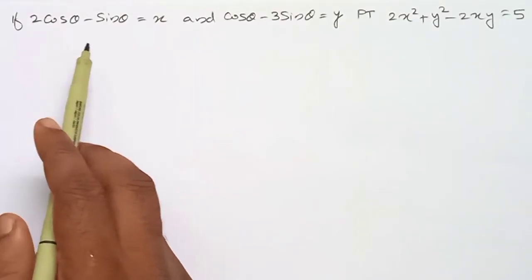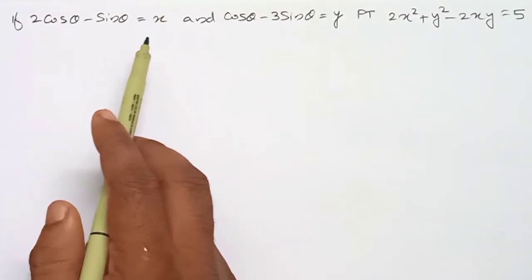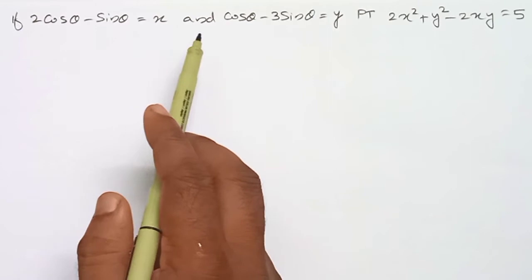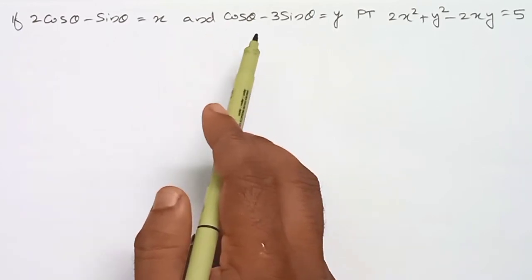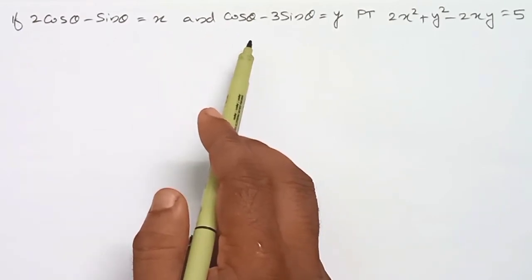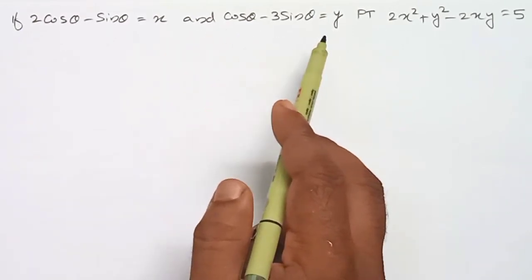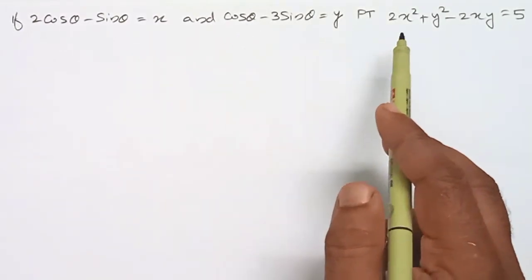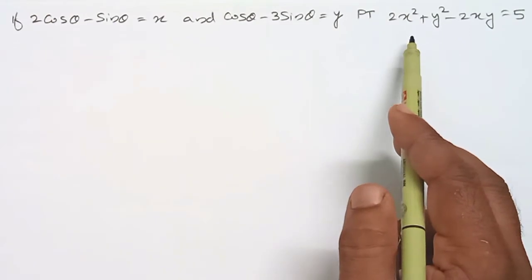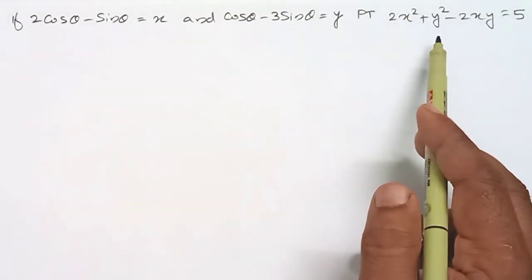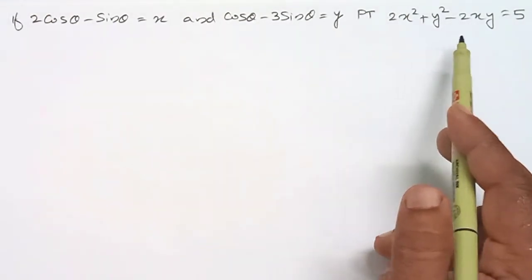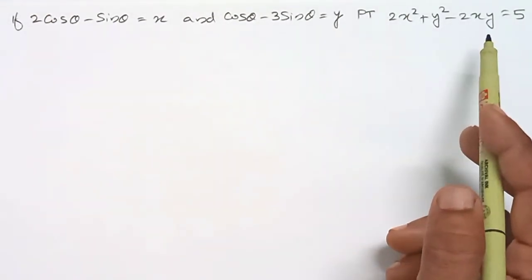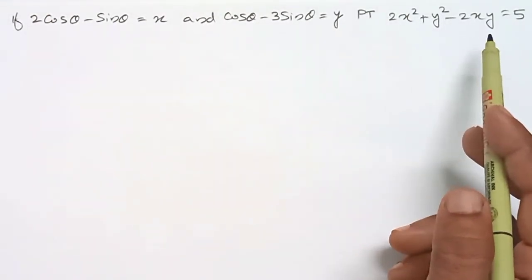If 2cosθ - sinθ is equal to x and cosθ - 3sinθ is equal to y, prove that 2x² + y² - 2xy is equal to 5.